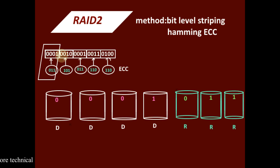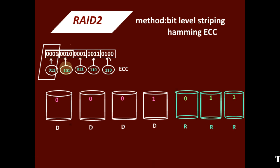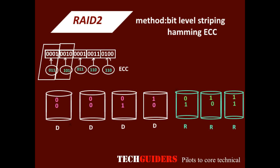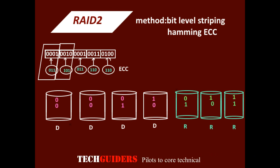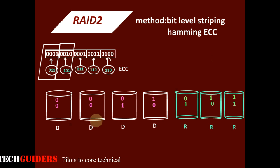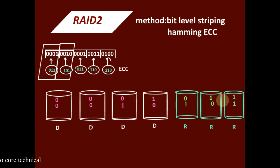While writing each word of the data onto the disk, the corresponding ECC is calculated on the fly, and the bits are striped to all the disks at the same time.